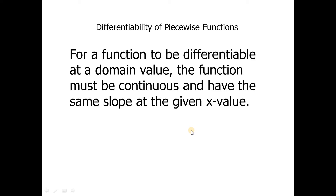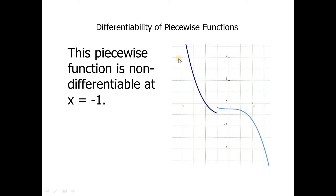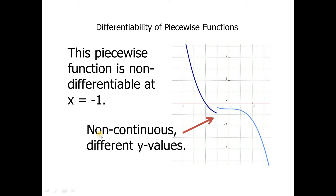This first piecewise function is non-differentiable at x equals negative 1. Non-differentiable means there's no derivative at that point. If you look at it, it's pretty obvious — I cannot find the derivative at negative 1 because this function is non-continuous. It has different y values at that point, therefore it is non-differentiable.